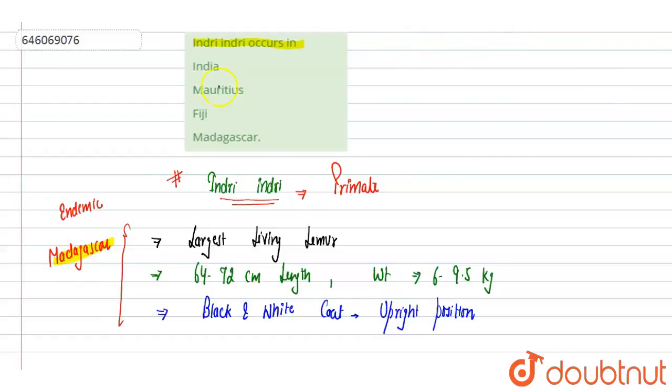Option A is India - lemurs are not found in India, so this is incorrect. Mauritius is also incorrect. Fiji is also incorrect. Madagascar - yes, it is native or endemic to Madagascar. Option D is correct. Hope you get it.